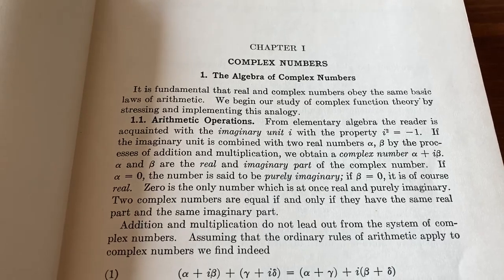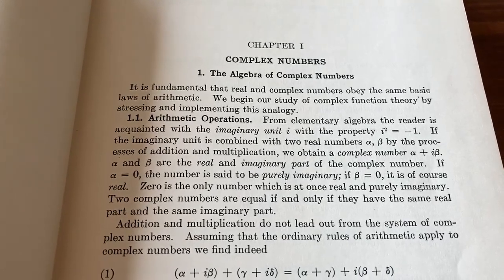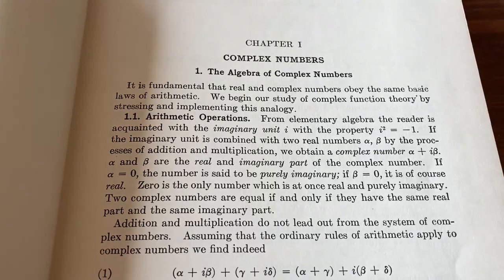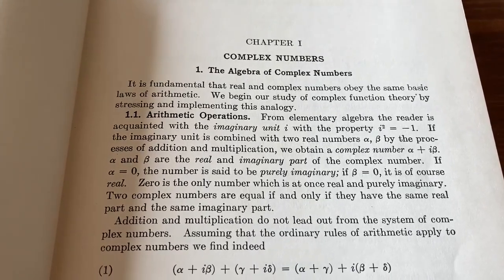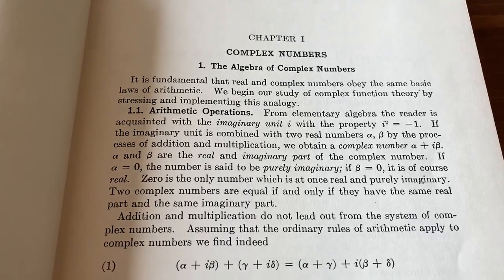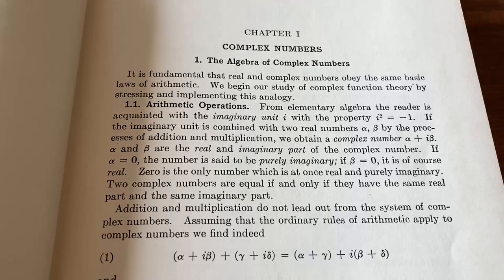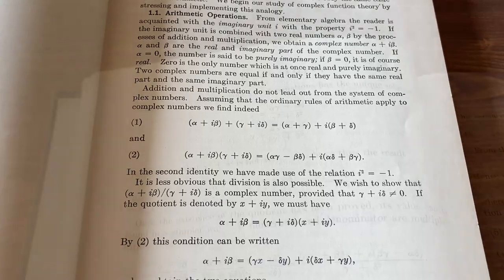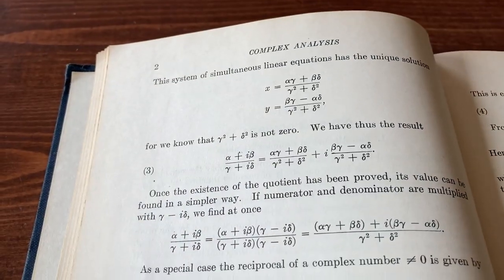Alpha and beta are the real and imaginary part of the complex number. And then it goes on and tells you some more things. For example, if alpha is zero, we say it's a purely imaginary number. And if beta is zero, it is, of course, real. So every real number is also a complex number. It talks about how do you add the complex numbers and how you multiply.